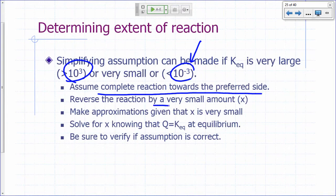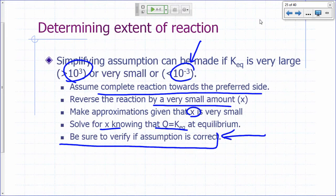And then what you do is you reverse the reaction by a very small amount x, and then you can make approximations given that x is very small. So you can make some simplifying assumptions to make your calculation easier. You don't have to go through the quadratic equation and more complicated equations. So solve for x knowing that Q equals Keq at equilibrium. But if you do make these assumptions, make sure at the very end you verify if your assumption is correct.